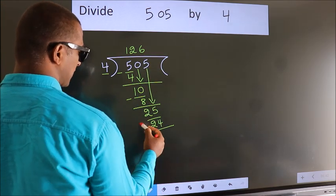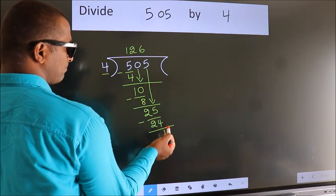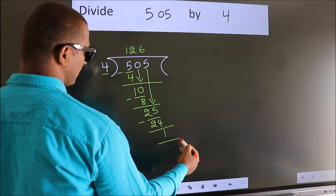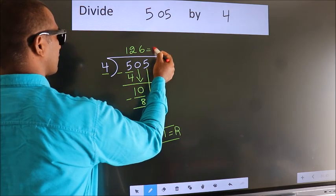Now we subtract and get 1. No more numbers to bring down, so we stop here. This is our remainder, and this is our quotient.